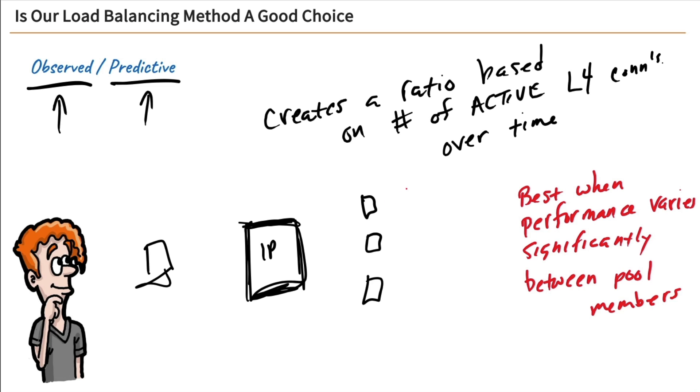So again, if this host here has a lot of CPU and memory, whereas these two have less CPU and memory, well, then they have less resources and their performance is going to vary. So when you have pool members that vary significantly in the resources, you're really going to want to use one of these observed or predicted because it's going to help give you better load balancing results.